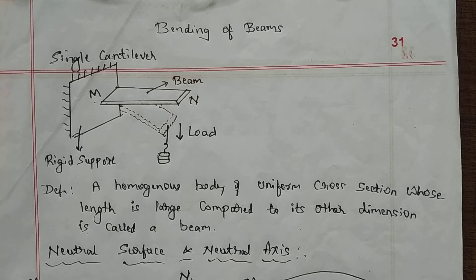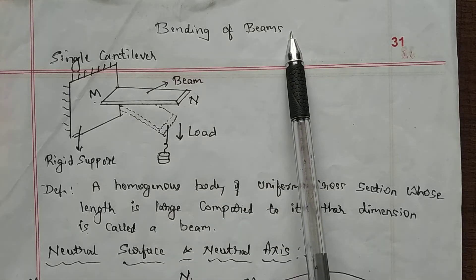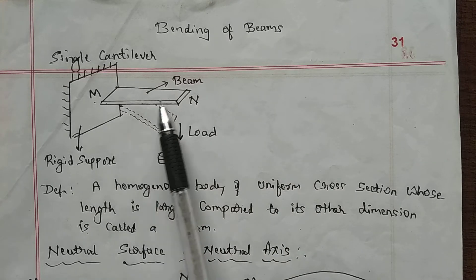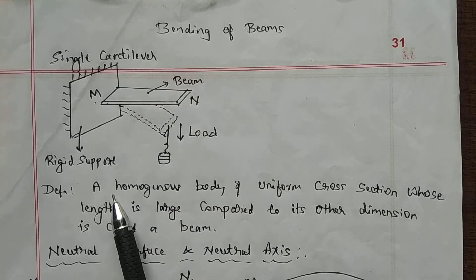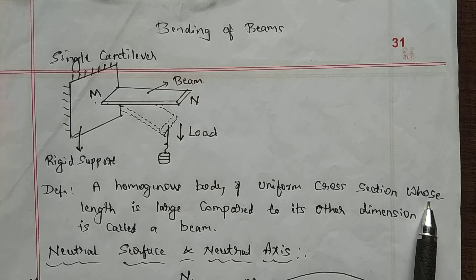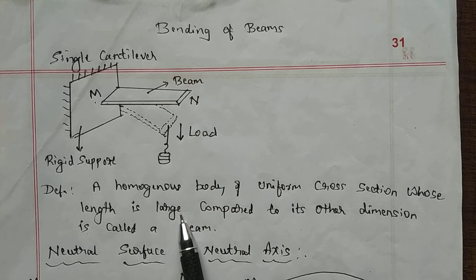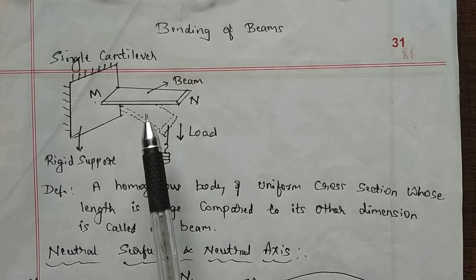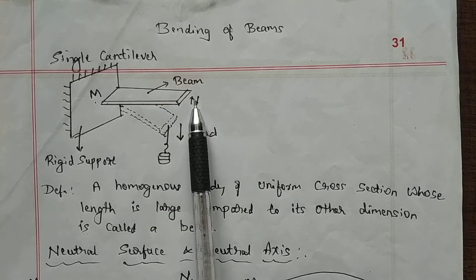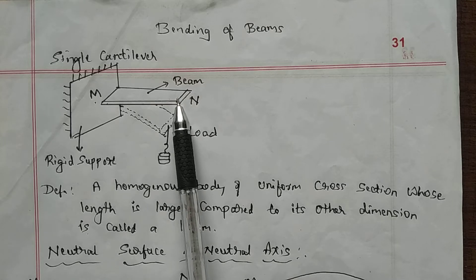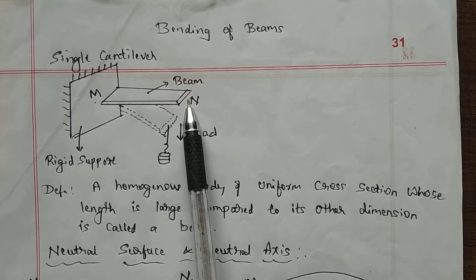We begin with the new topic: the bending of beams. A homogeneous body of uniform cross-section area whose length is larger compared to its other dimensions is called a beam. The length is more compared to the breadth and thickness — that is what we call a beam.